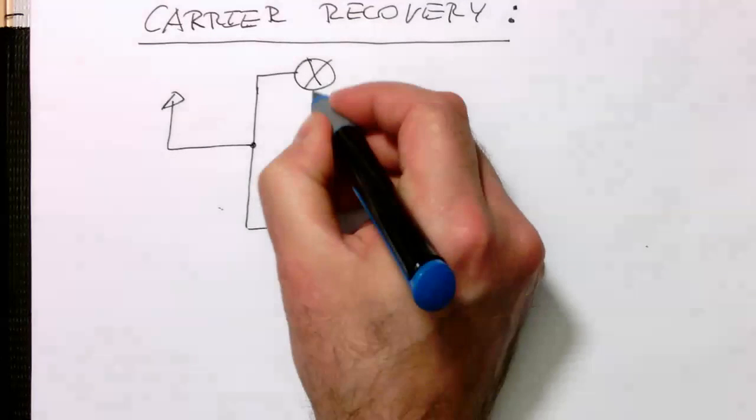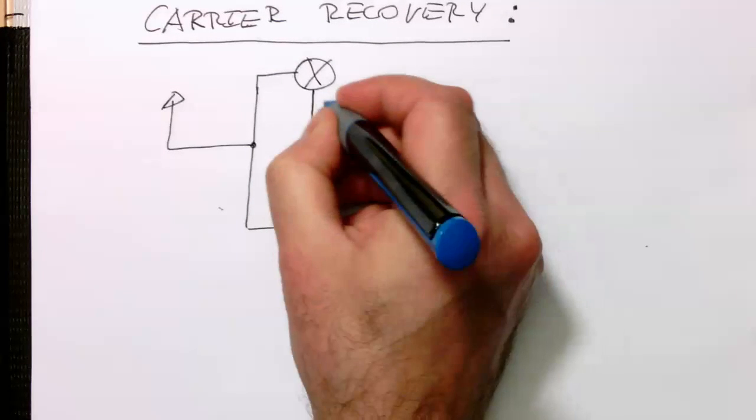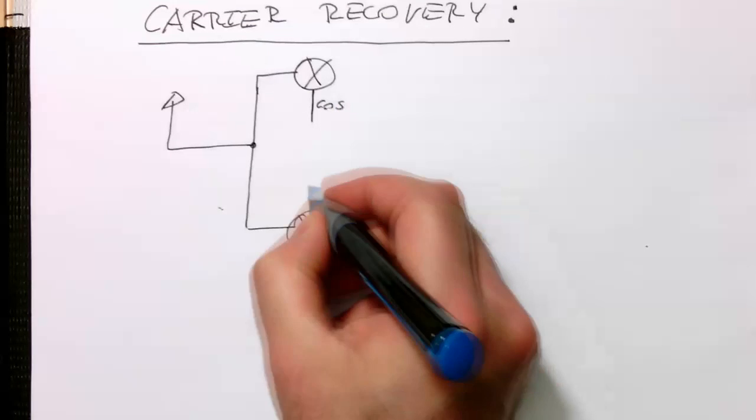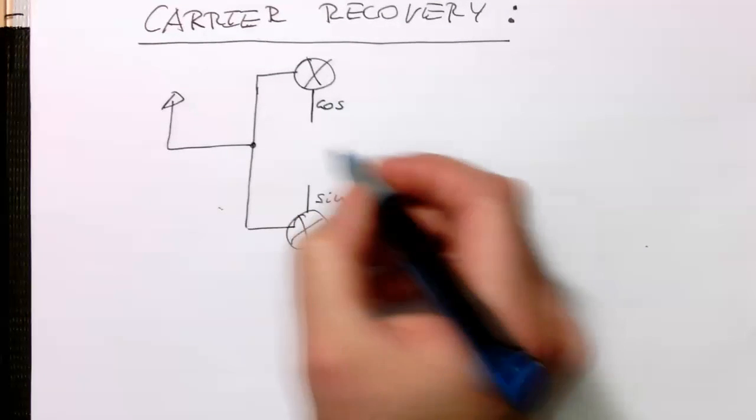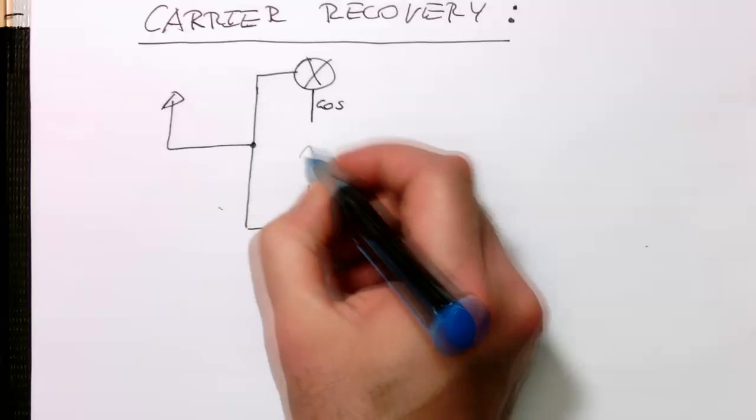And so here we have got the cosine term and here we've got the sine term. And this is generated here by an oscillator.